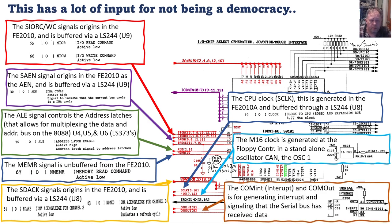The COMIN and COMOUT signals are for generating interrupts and signaling that the serial bus has received data. They're also for generating a system interrupt, seemingly controlled by the GYM chip, which probably generates interrupts when the serial bus has received data.